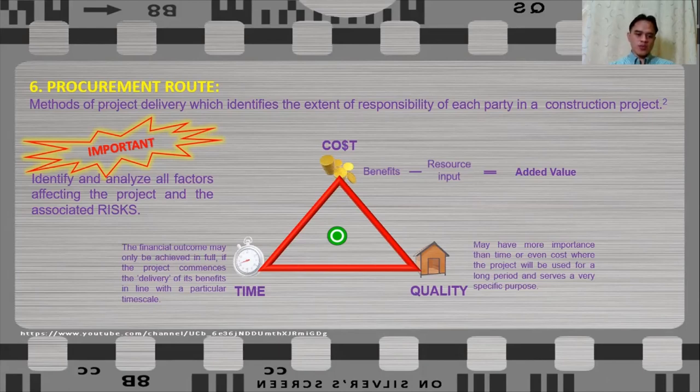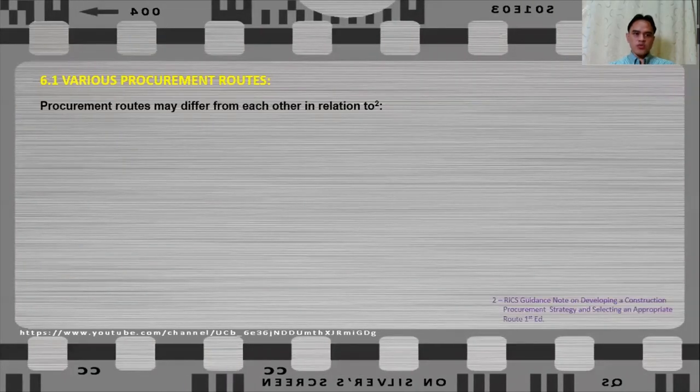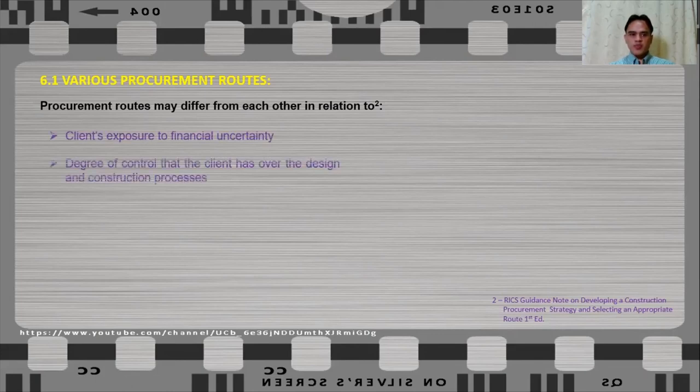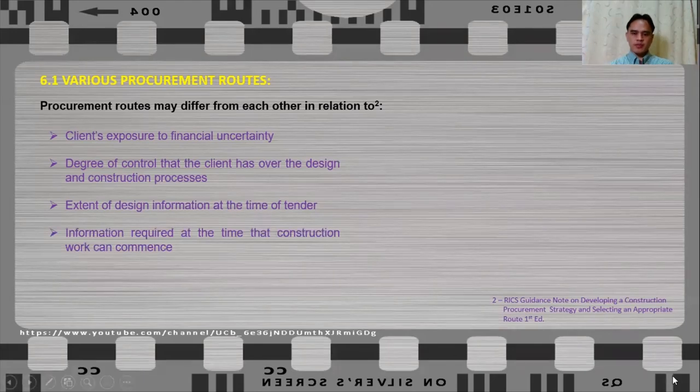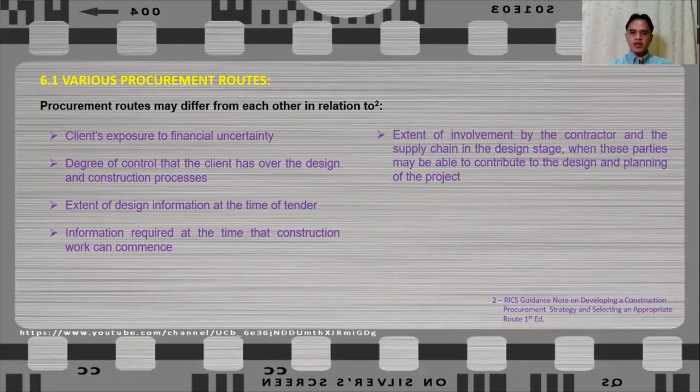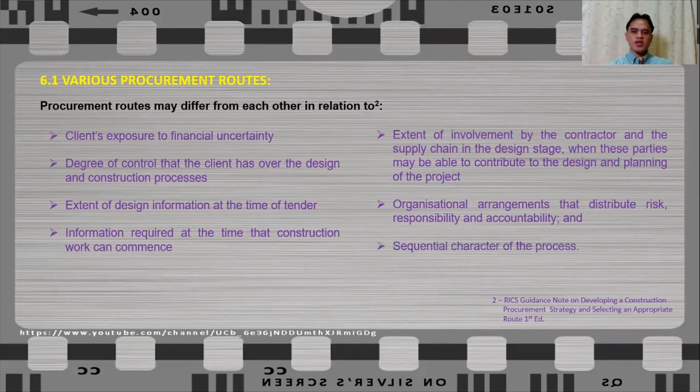Now, there are different procurement routes to choose from and these procurement routes may differ from each other in relation to the client's exposure to financial uncertainty, the degree of control that the client has over the design and construction process, the extent of design information at the time of tender, the information required at the time that the construction work can commence, extent of involvement with the contractor and the supply chain in the design stage, when these parties may be able to contribute to the design and planning of the project, organizational arrangement that distribute risk, responsibility, and accountability, and the sequential character of the process.